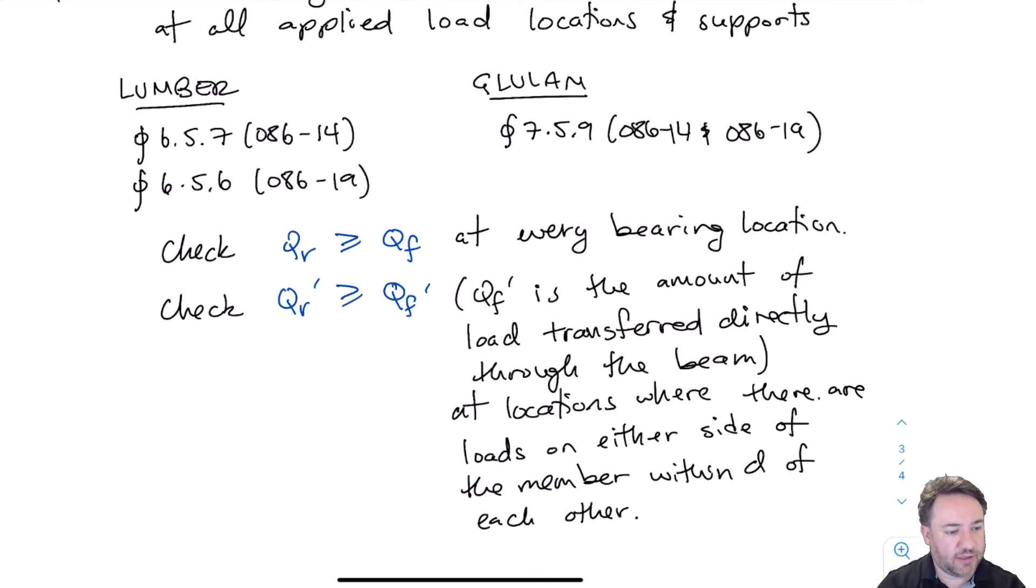So I'm going to check QR greater than QF. That's my effect of all applied loads at every single bearing location, wherever I have a load or reaction. And I'm going to check QR prime, the effect of loads applied near a support resistance, against those loads that are transferred directly from the top to the bottom of the beam, i.e. not transferred in shear to the reaction. And I'm going to check that at any locations where I have loads on either side of the beam that are within D, that is the depth of the beam from each other.